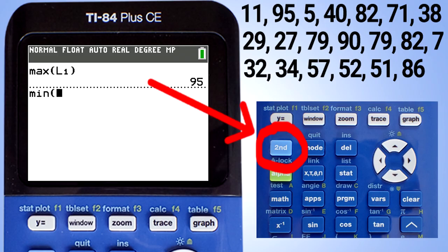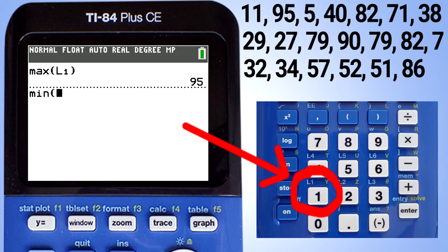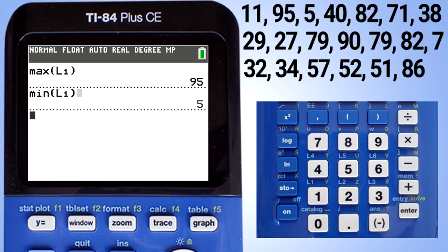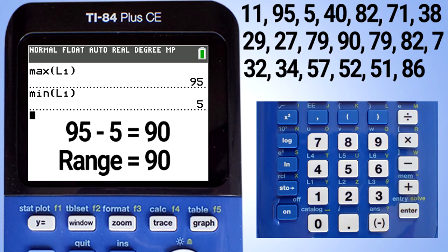Enter L1 by pressing the second button and the L1 button. Close the parentheses and press the enter button. The lowest number in our data set is 5. To find the range, take 95 minus 5 and the result is 90. The range is 90.